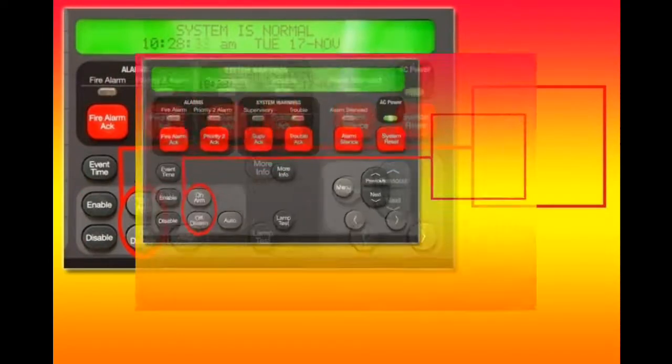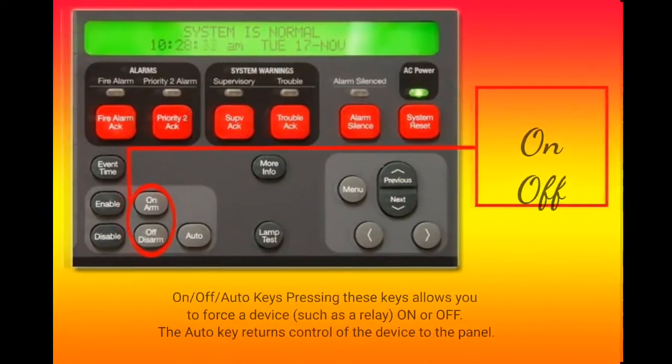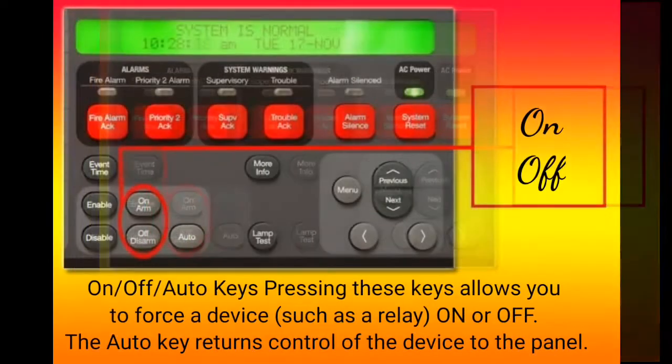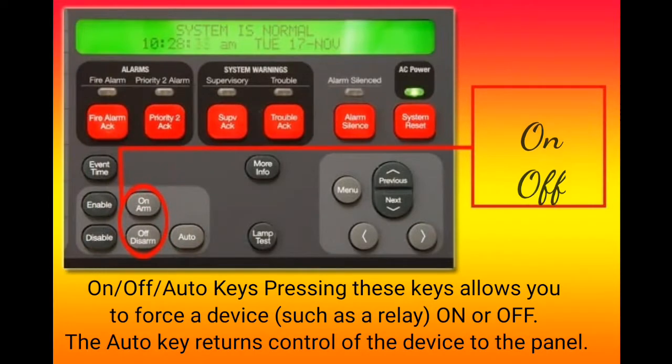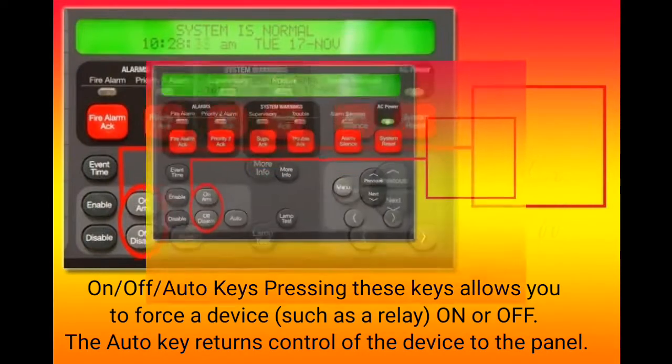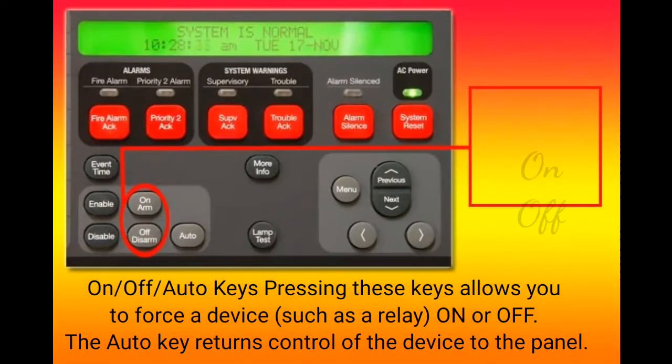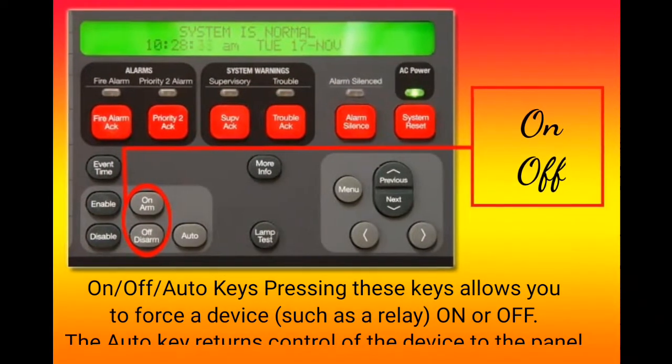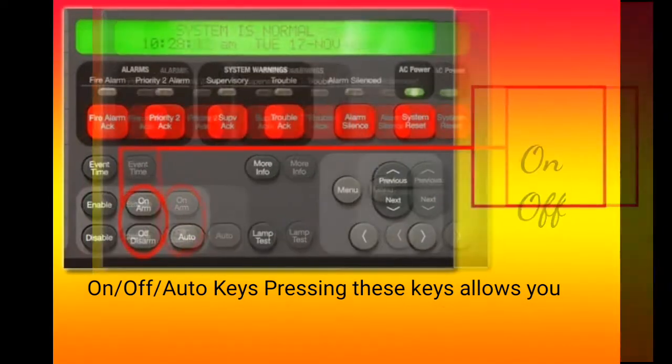On, Off, and Auto Keys. Pressing the On and Off keys allows you to force a device, such as a relay, on or off. The Auto Key returns control of the device to the panel.